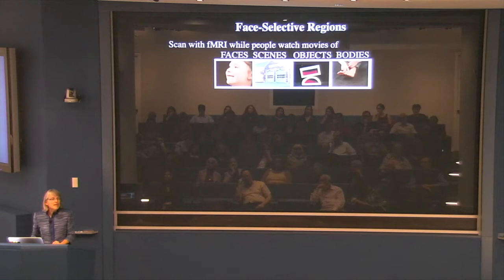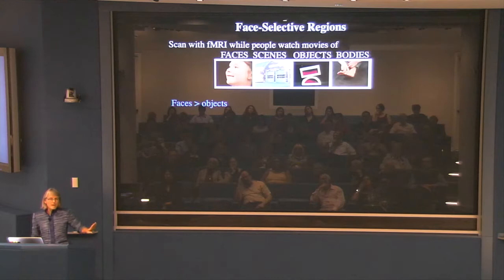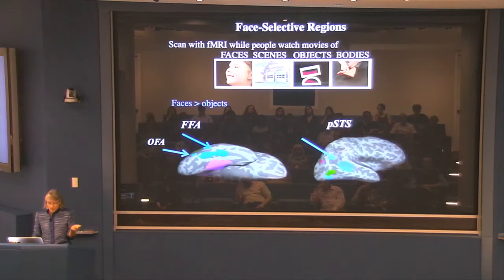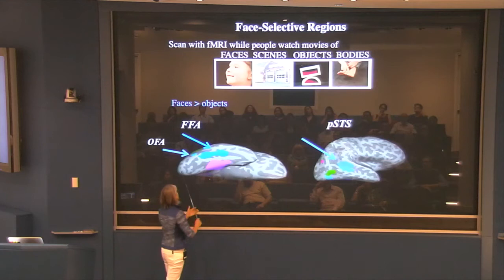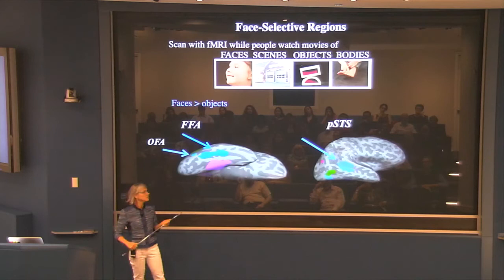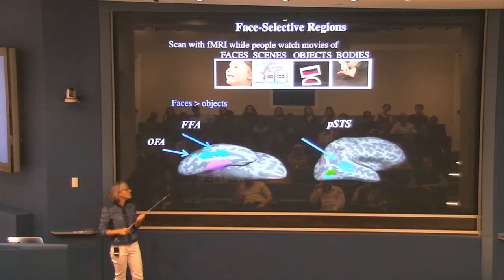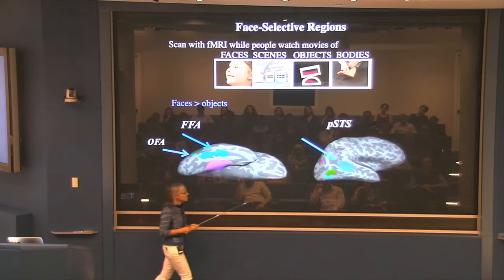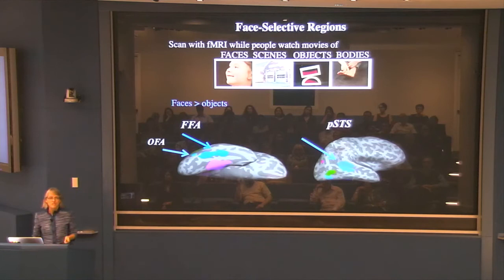The way you find face processing regions in pretty much any subject is to scan them in this paradigm and do a contrast over the whole brain: show me regions that respond significantly more when subjects are looking at faces than objects. When you do that, you get regions like these blue ones here. This is the bottom surface of the brain — the temporal lobe — inflated so you can see the whole cortical surface. The dark gray bits are the bits that were inside a sulcus and got inflated so you could see them.